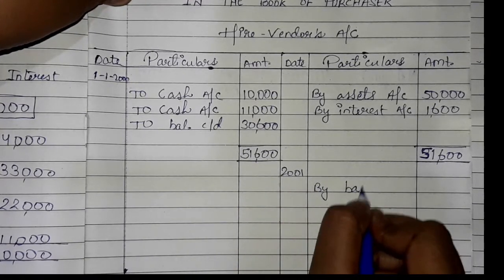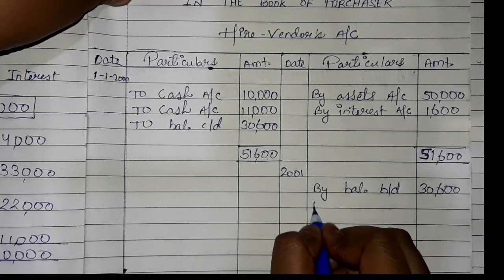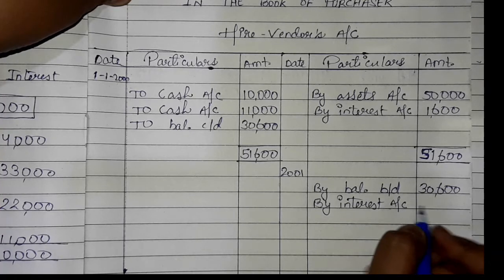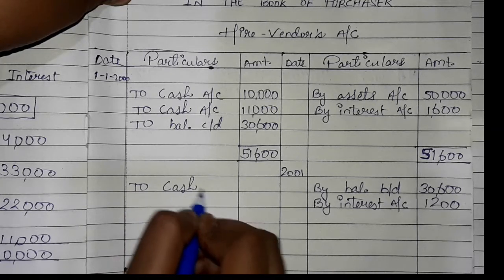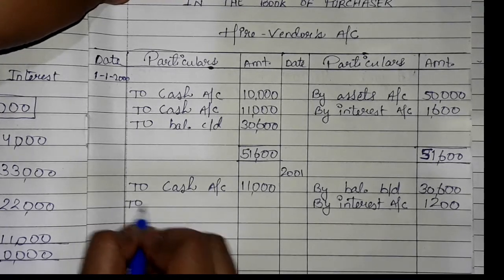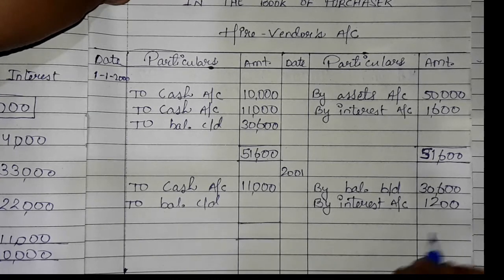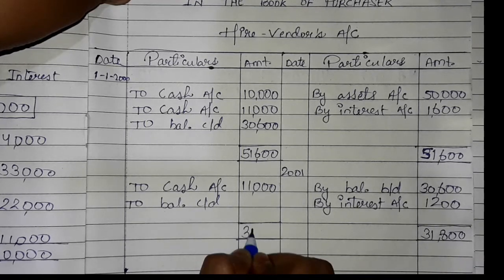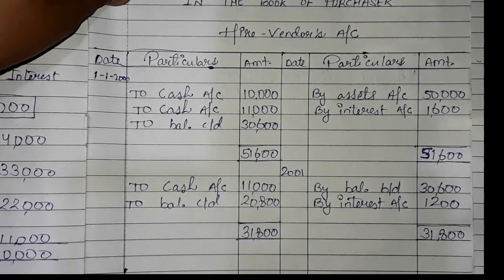In 2001 we open with balance b/d of 30,600. Then interest by interest account is 1,200. Second year installment to cash account is 11,000. Closing balance c/d is calculated; total is 31,800 on debit side, and closing balance is 20,800.